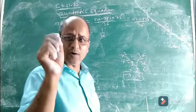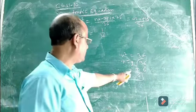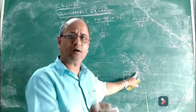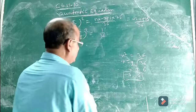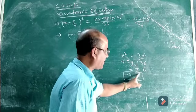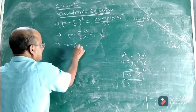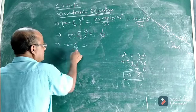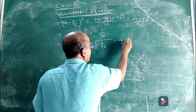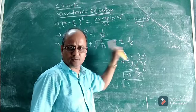So, since (x minus 5/6)² equals 1/36, we take the square root of both sides. x minus 5/6 equals plus or minus the square root of 1/36, which is plus or minus 1/6.